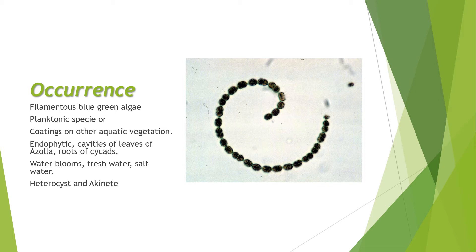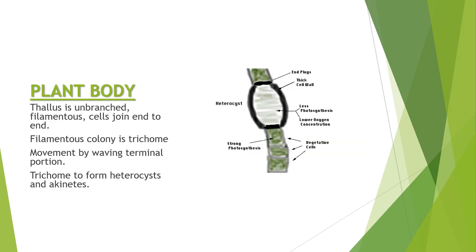Anabaena can occur in both fresh water and salt water. Heterocysts and akinetes are also characteristic occurrences of Anabaena. Heterocysts are slightly enlarged cells present in the filamentous form of Anabaena, while akinetes are similar but have somewhat different cells — these will be discussed in detail in further slides.